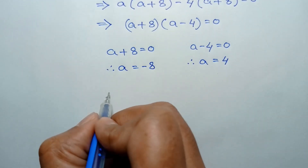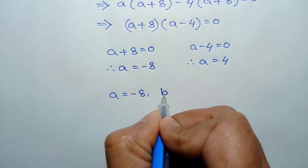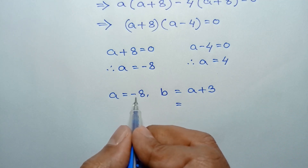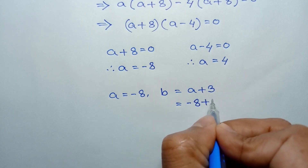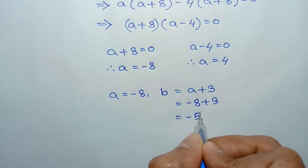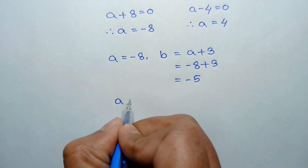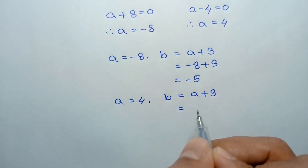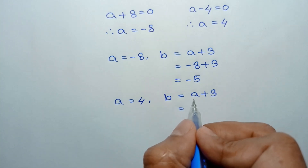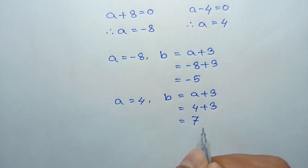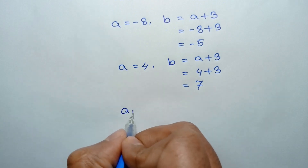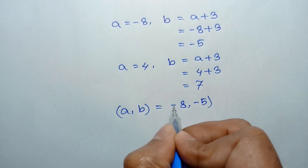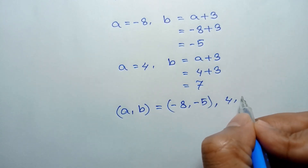Now, when A is equal to negative 8, from equation 3, B is equal to A plus 3. Substituting A equals negative 8, we get negative 8 plus 3, which is equal to negative 5. And when A is equal to 4, from equation 3, B is equal to 4 plus 3, which is equal to 7.